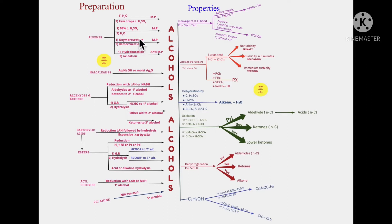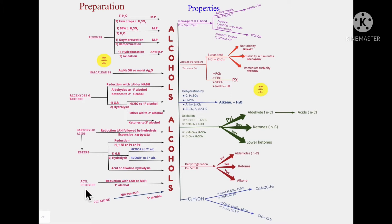On the left panel of the flow chart that you see on your screens, we have got the preparatory methods of alcohol. You see the arrows leading from aldehydes and ketones to alcohols, haloalkanes to alcohols, alkenes to alcohols, similarly acylchlorides to alcohols and so on. Whereas on the right panel, you will see alcohols showing different types of behavior.